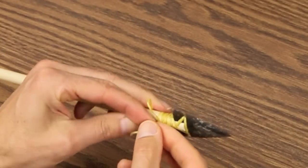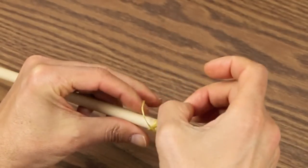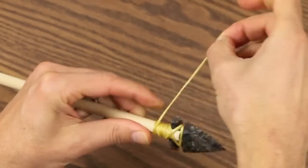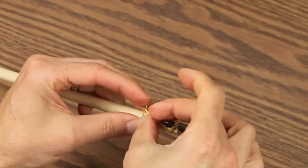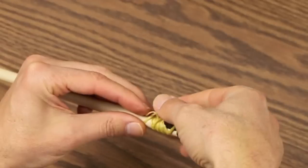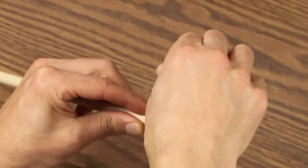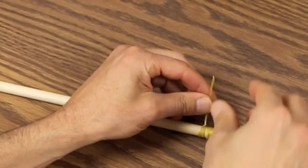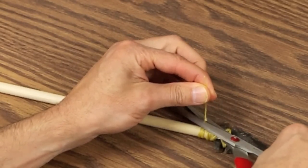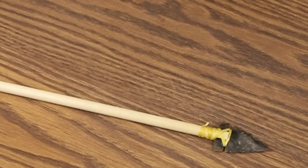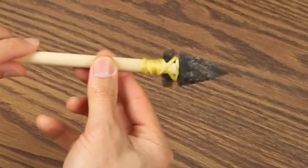Repeat this, creating the loop, passing the sinew through, and pulling it secure. You'll do this one last third time, pulling it secure, and that's the end of the wrapping. Simply pick up your scissors, cut off the tail, and if there is any remaining that is sticking out, simply fold this over, and with the waxy coating it will blend right in.